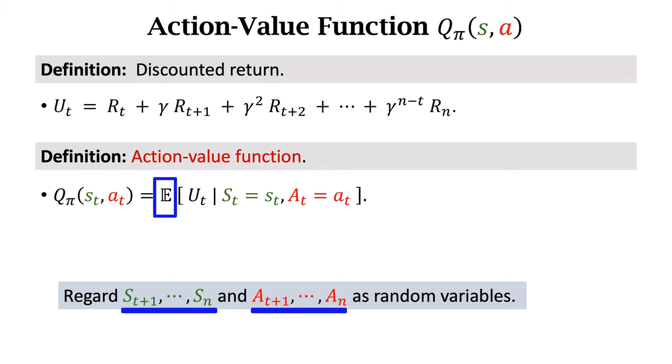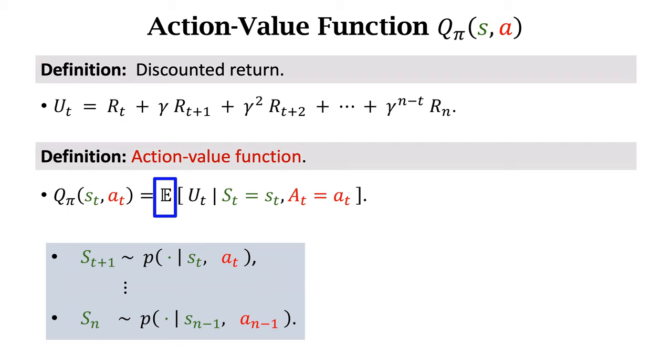To compute the expectation, we need the probability density functions of s and a. The environment generates a new state by randomly sampling from the state transition function. P is the probability density function of a state. The actions are randomly sampled from the policy function π. Thus, the resulting expectation depends on π. If the policy function π changes, the outcome of expectation would be different.